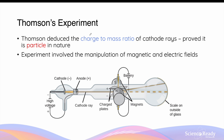Thomson's experiment deduced the charge-to-mass ratio of cathode rays. This is a particularly important experiment in the field of physics and chemistry because it proved that cathode rays were particles in nature. It is also the very first experiment that provided evidence for subatomic particles, the electron in particular. Thomson's experiment involved the manipulation of both magnetic and electric fields. This diagram shows a summary of the setup used by Thomson, which we will discuss in further detail in this video.